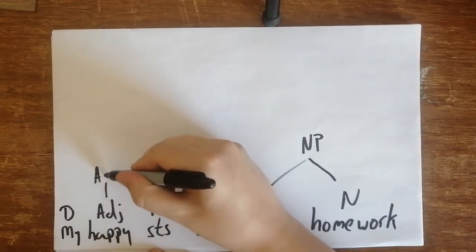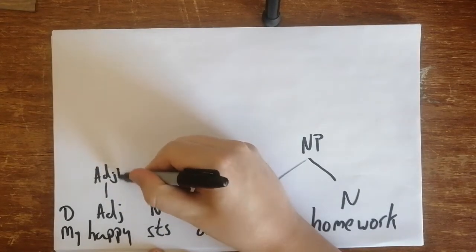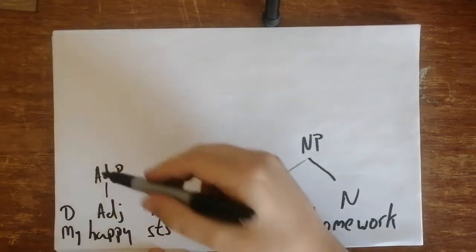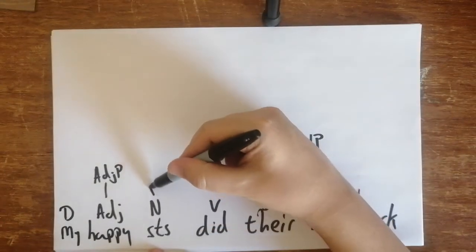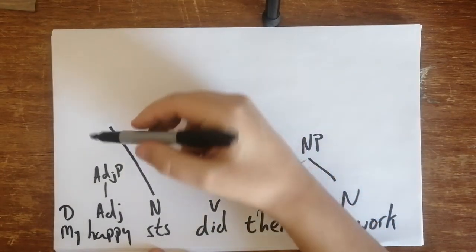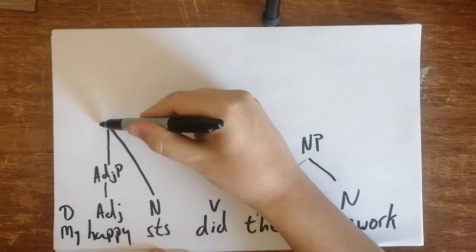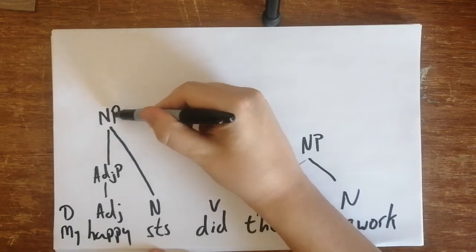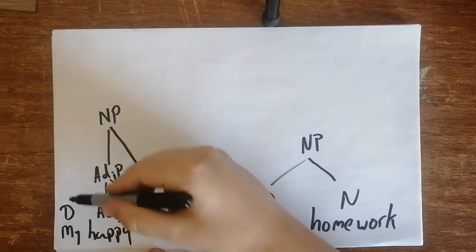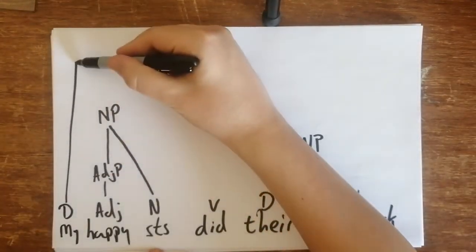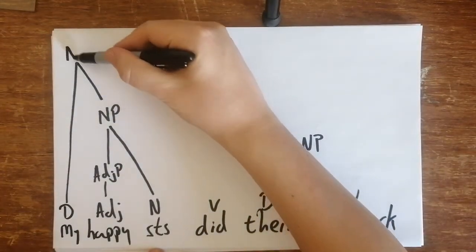So here we would have an adjective phrase, which is 'happy', and then 'students' would be like that - that would be a noun phrase. And then above that, all the way like that, that's another noun phrase.